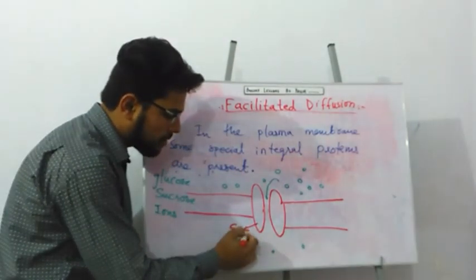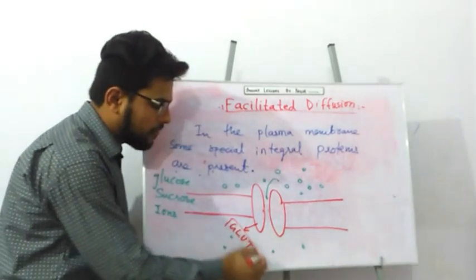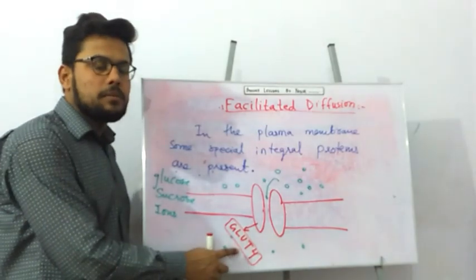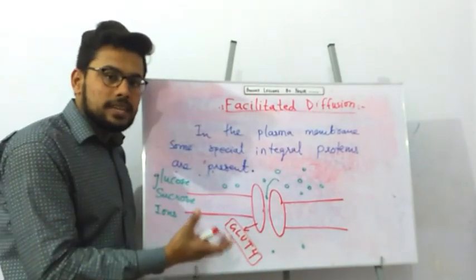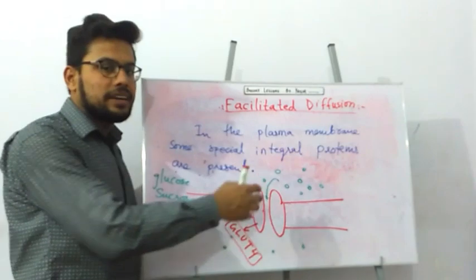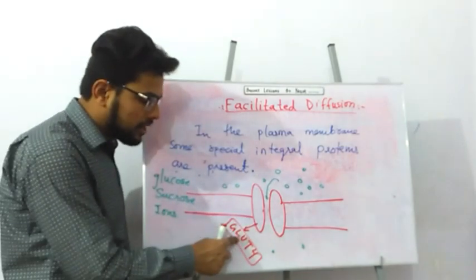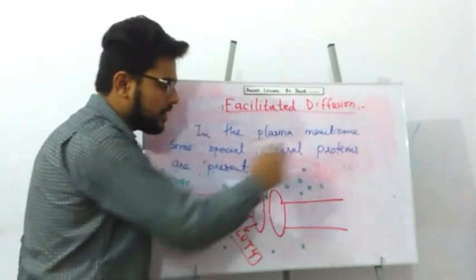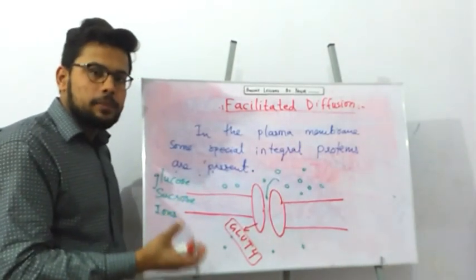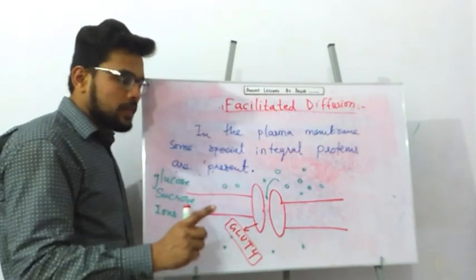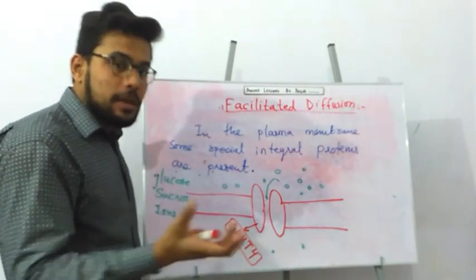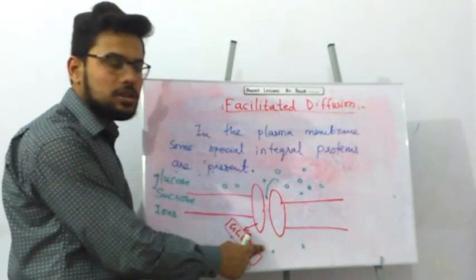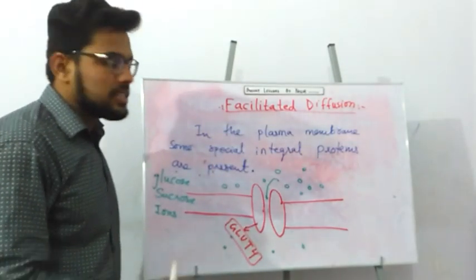A specific example is the GLUT4 protein. GLUT4 is a membrane integral protein present in the plasma membrane of fat cells and body muscle cells, allowing muscles and fat cells to take up glucose. GLUT4 helps glucose enter into the cell, transporting it through the semi-permeable membrane from a region of high concentration to a region of low concentration — this is called facilitated diffusion.